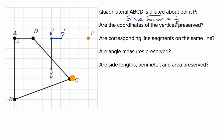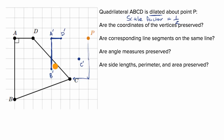Now point C — to go from point P to point C, we have to go four down and to the left. If you apply a scale factor of one half, you go two down and one to the left. So this would be C prime. And so A prime, B prime, C prime, D prime — the image of quadrilateral ABCD after the dilation around point P.